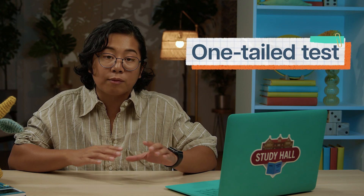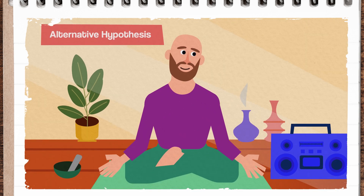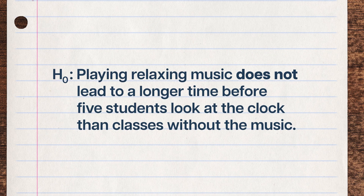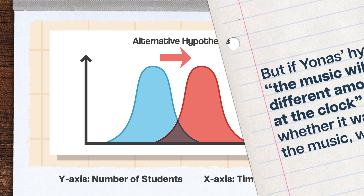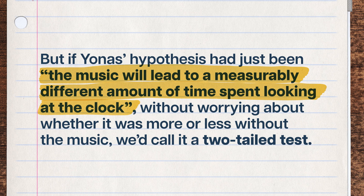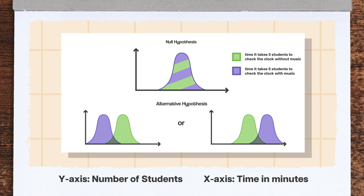Jonas's alternative hypothesis is what's called a one-tailed test because it only looks at one tail of the distribution of possible outcomes — he's testing whether one thing is greater or less than a particular reference point. His alternative hypothesis is that the period of time before five students look at the clock is longer with music than without. His null hypothesis is that playing relaxing music does not lead to a longer time before five students look at the clock. But if Jonas's hypothesis had just been that music will lead to a measurably different amount of time spent looking at the clock — without specifying more or less — we'd call it a two-tailed test, because the average time could be more or less than the time without the music.